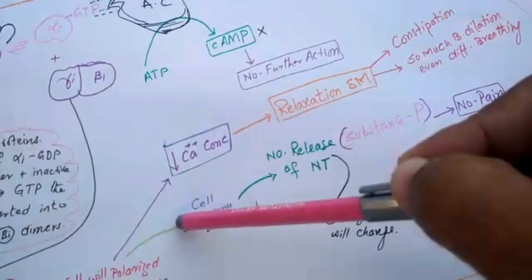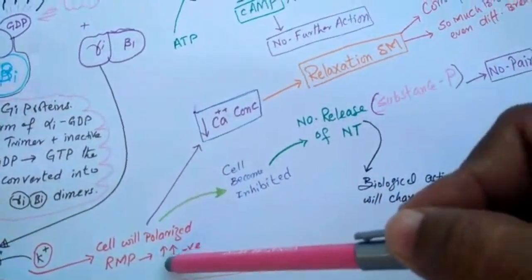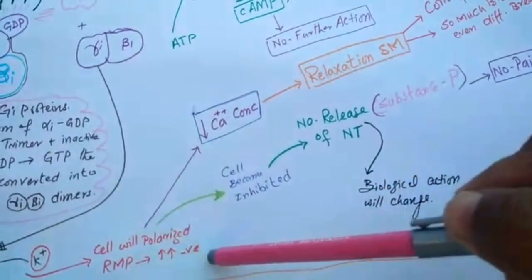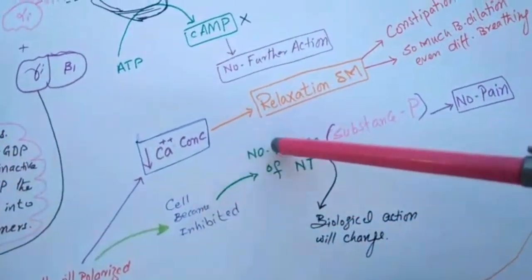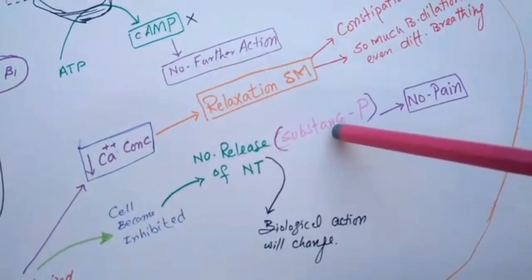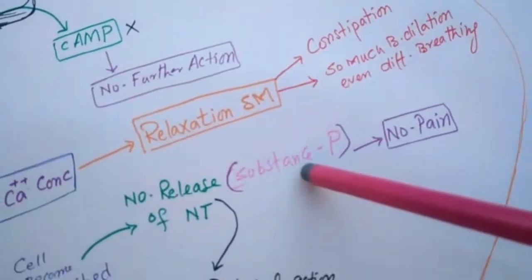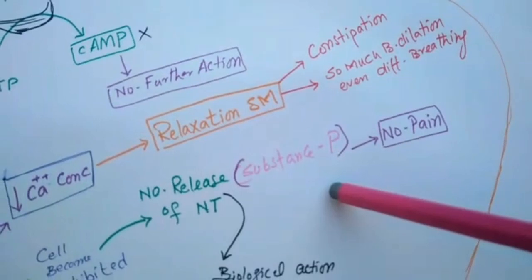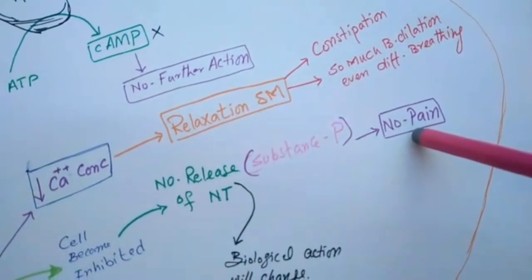When morphine is the best pain killer: so when the cell is polarized and membrane potential becomes more negative, the cell becomes inhibited and there is no release of neurotransmitter, especially substance P, which is responsible for pain. When these neurotransmitters like substance P are not released, they will not interact with pain receptors and there will be no pain.